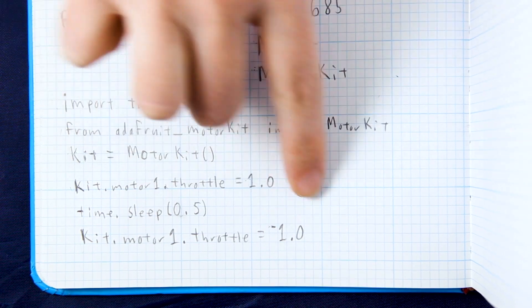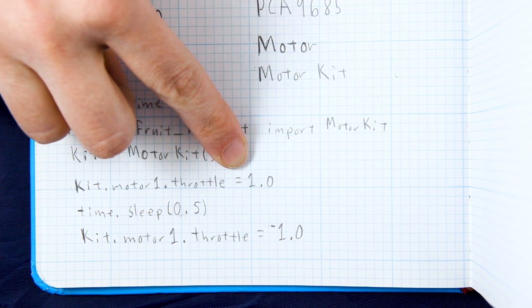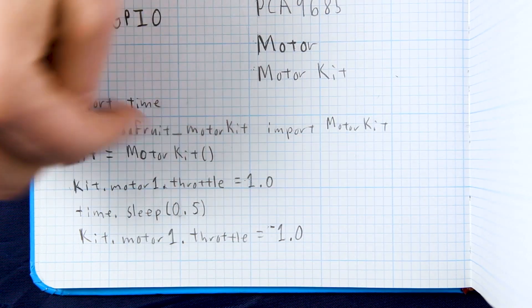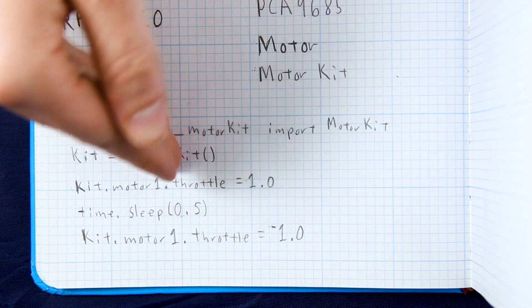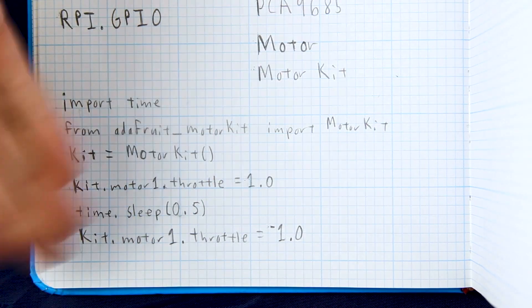And then you give it a value between 1 and negative 1. So 1 is full power forward and negative 1 is full power reverse. And if you wanted to brake it would be 0 or half power would be 0.5 and so on.